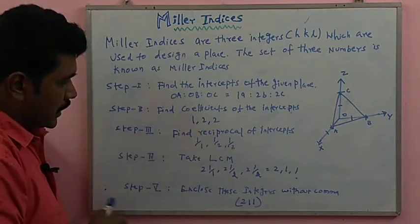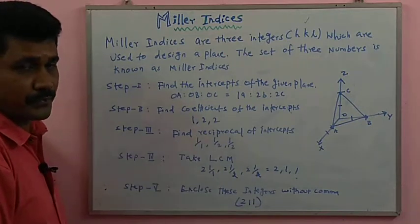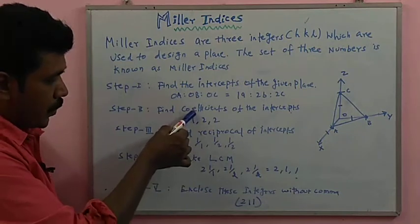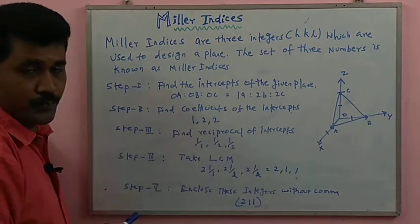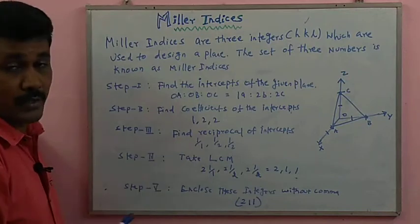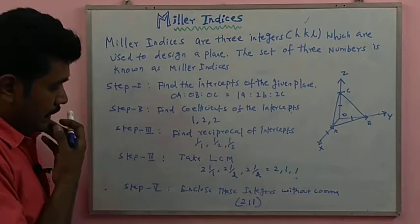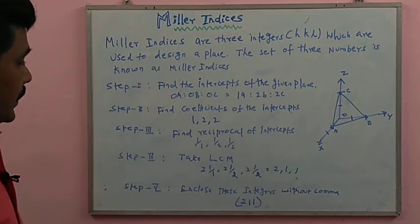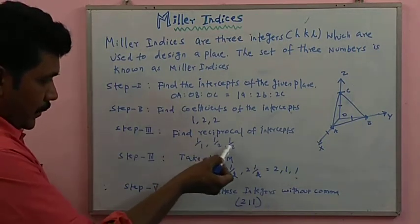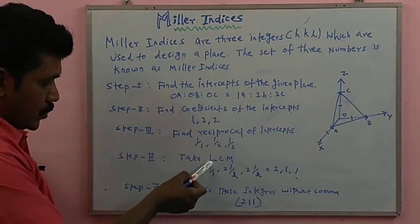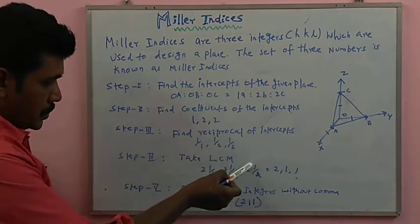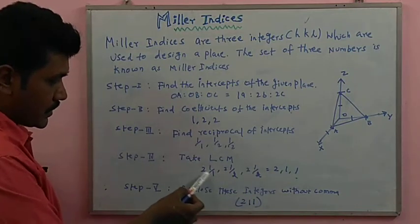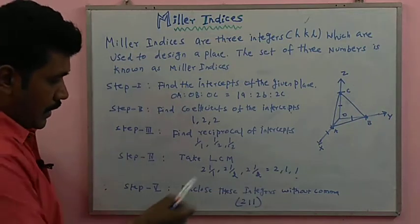Step three: find the reciprocals of the intercepts. The reciprocal values are 1/1, 1/2, and 1/2. Step four: take the LCM (least common multiple). The LCM is 2, so: 2×(1/1), 2×(1/2), 2×(1/2). After cancellation, the result is 2, 1, 1.